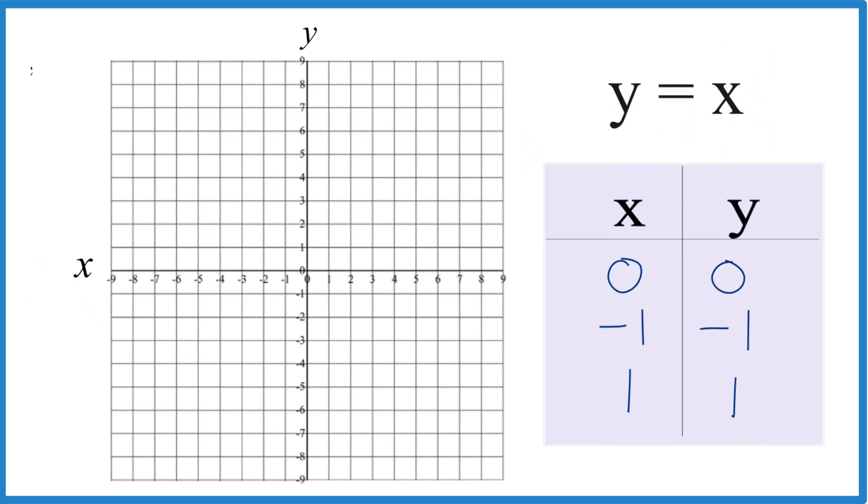So let's graph the line for y equals x here. We have 0, 0. That's right here. Then we have negative 1 for x, negative 1 for y. So negative 1x, negative 1y.